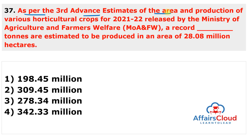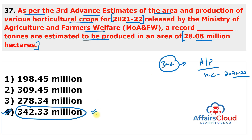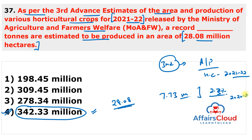Next question: as per the third advance estimates of area and production of various horticulture crops for 2021-22 released by the Ministry of Agriculture and Farmers Welfare, a record of how many million tons is estimated to be produced in an area of 28.08 million hectares? The answer is 342.33 million tons. According to the estimate, a record 342.33 million tons are estimated to be produced in 28.08 million hectares, showing an increase of about 7.73 million tons, which is approximately 2.3% over 2020-21.